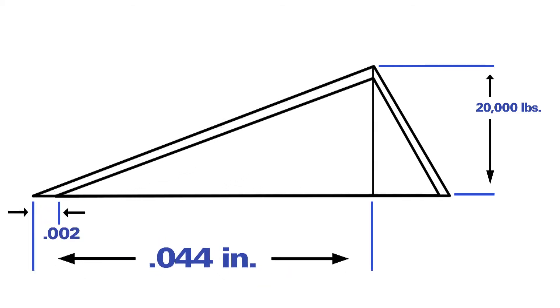Now if two thousandths of relaxation occurs, the loss of preload will only be the ratio of two thousandths to forty-four thousandths. This would result in a loss of preload of less than five percent. The remaining preload would be over nineteen thousand pounds.